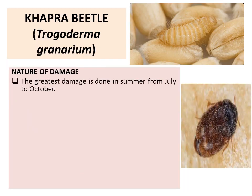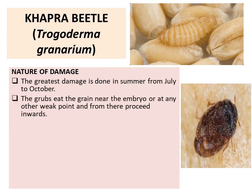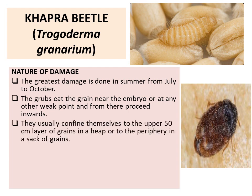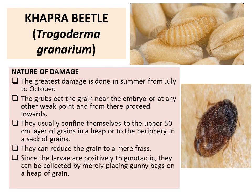Nature of damage: The greatest damage is done in summers from July to October. The grubs eat the grain near the embryo or at any other weak point, from where they proceed inwards. They usually confine themselves to the upper 50 cm layer of grain in a heap or to the periphery in sacks of grain. They can reduce the grains to mere frass. Since the larvae are positively thigmotactic, they can be collected by merely placing gunny bags on the heap of grain.